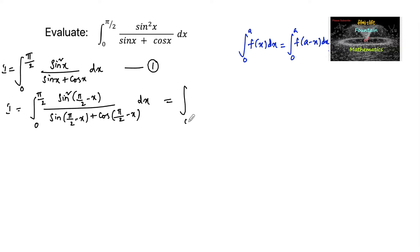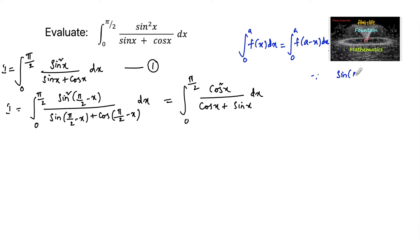This equals ∫₀^(π/2) cos²x / (cosx + sinx) dx, since sin(π/2 − x) = cosx and cos(π/2 − x) = sinx. Let us consider this as equation 2.